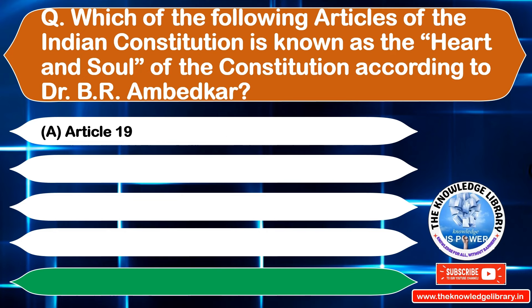The next question is: under which article is the right to freedom of movement and residence guaranteed? Option A: Article 17, Option B: Article 18, Option C: Article 19, Option D: Article 21. The correct answer is Option C: Article 19.